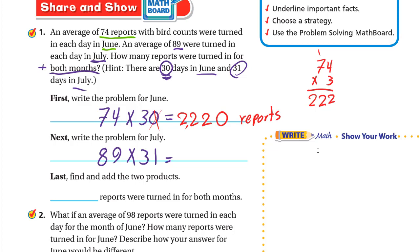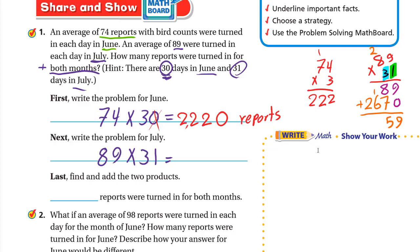For July: 89 times 31. This is a two-digit multiplication. First multiply 89 by 1: 1 times 9 is 9, 1 times 8 is 8, giving 89. Then multiply 89 by 30: put a 0 and multiply by 3. 3 times 9 is 27, write 7 carry 2; 3 times 8 is 24 plus 2 is 26. Add the partial products: 9, 8+7=15 write 5 carry 1, 1+6=7, and 2. Result: 2,759 reports in July.